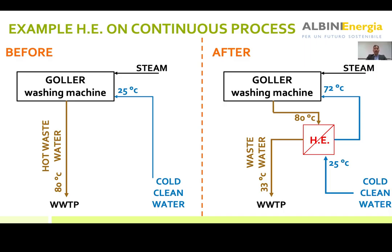This slide shows a washing machine which is a continuous machine. A continuous machine is a machine that requires fresh water at the same moment it is discharging wastewater. So you don't need to collect the fresh water and the wastewater - you can go directly to the wastewater heat exchanger. In this case, it's very easy to apply.